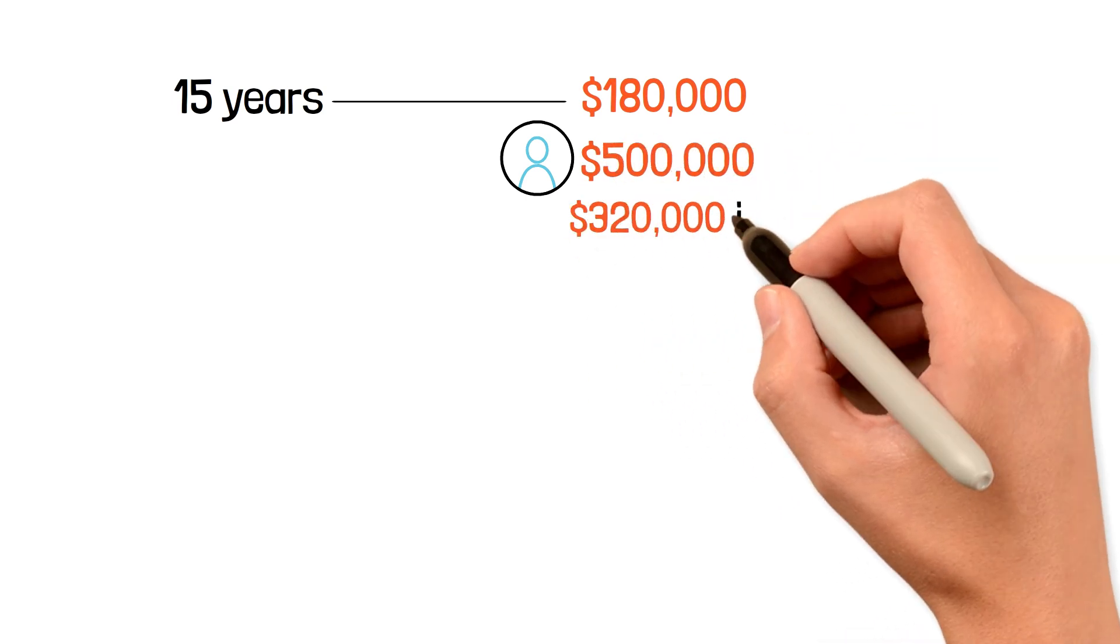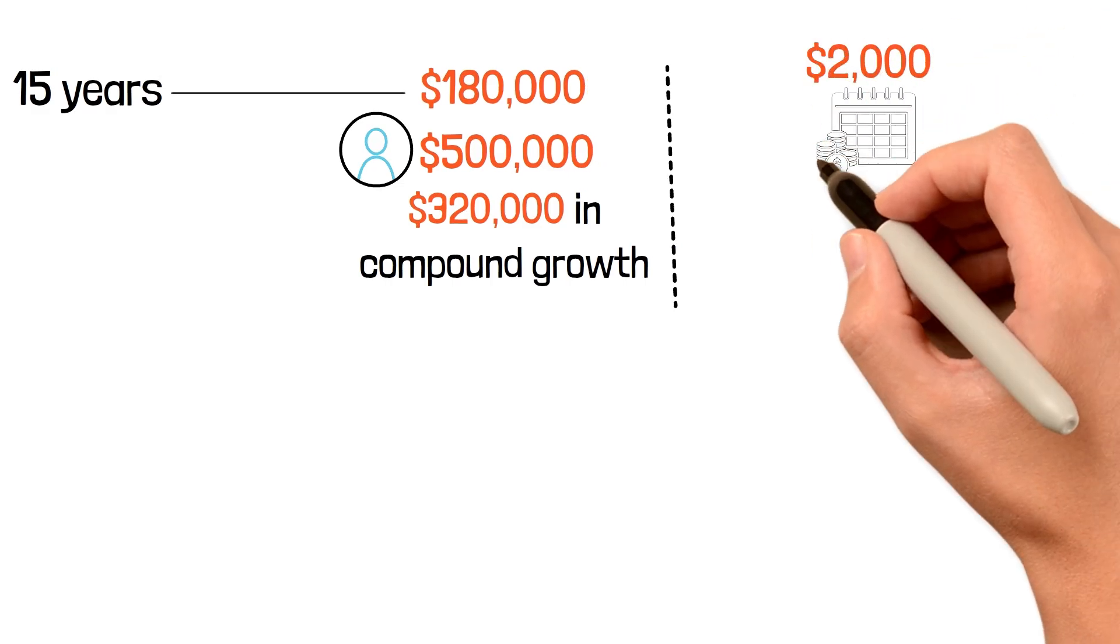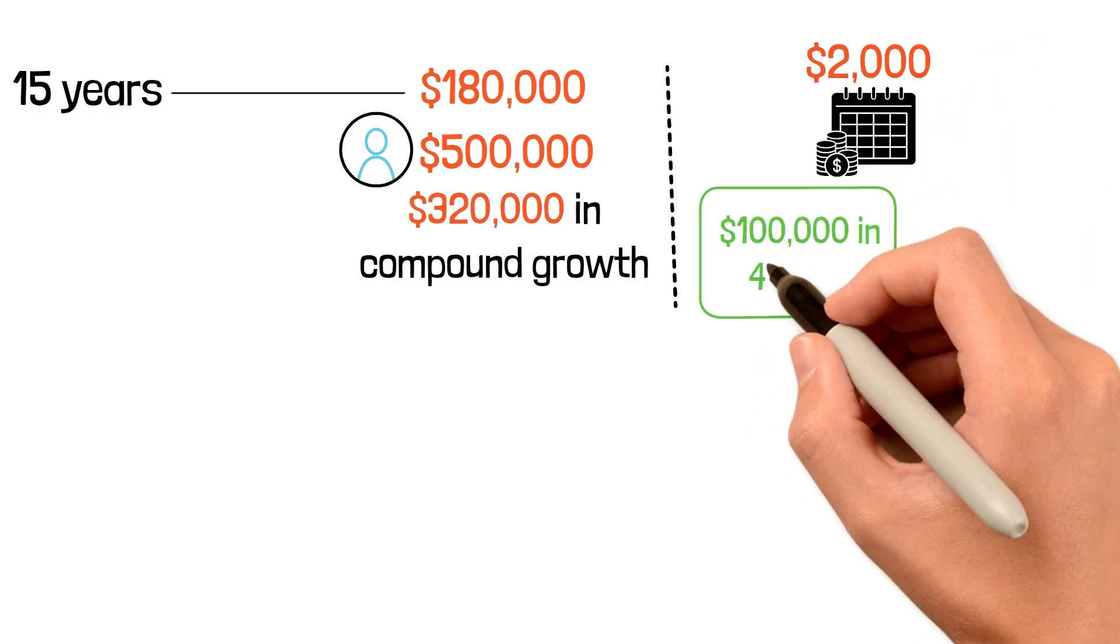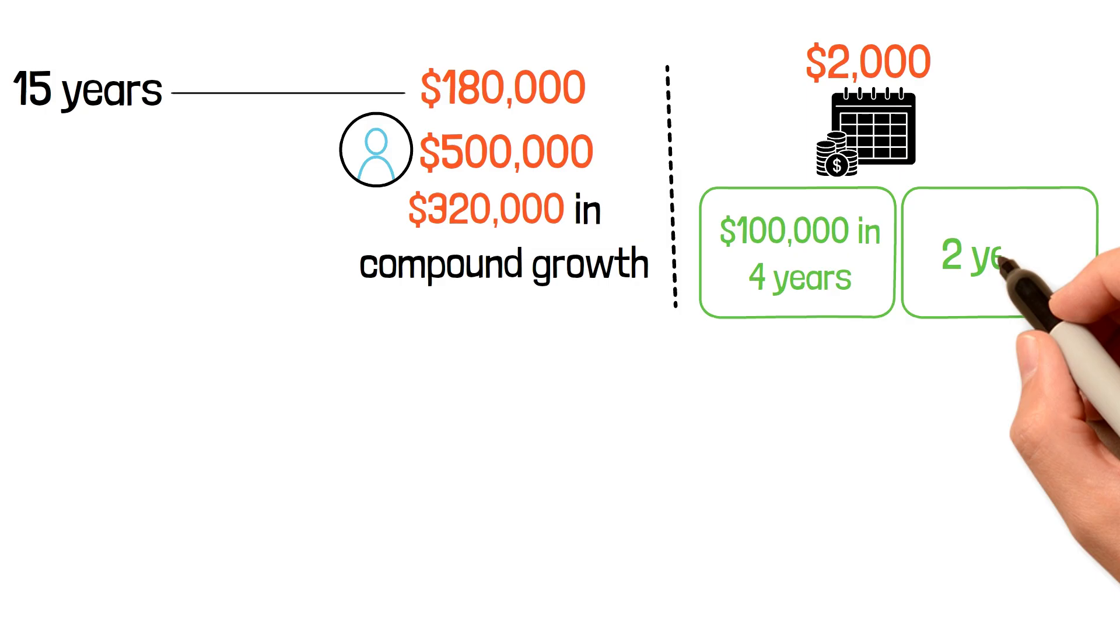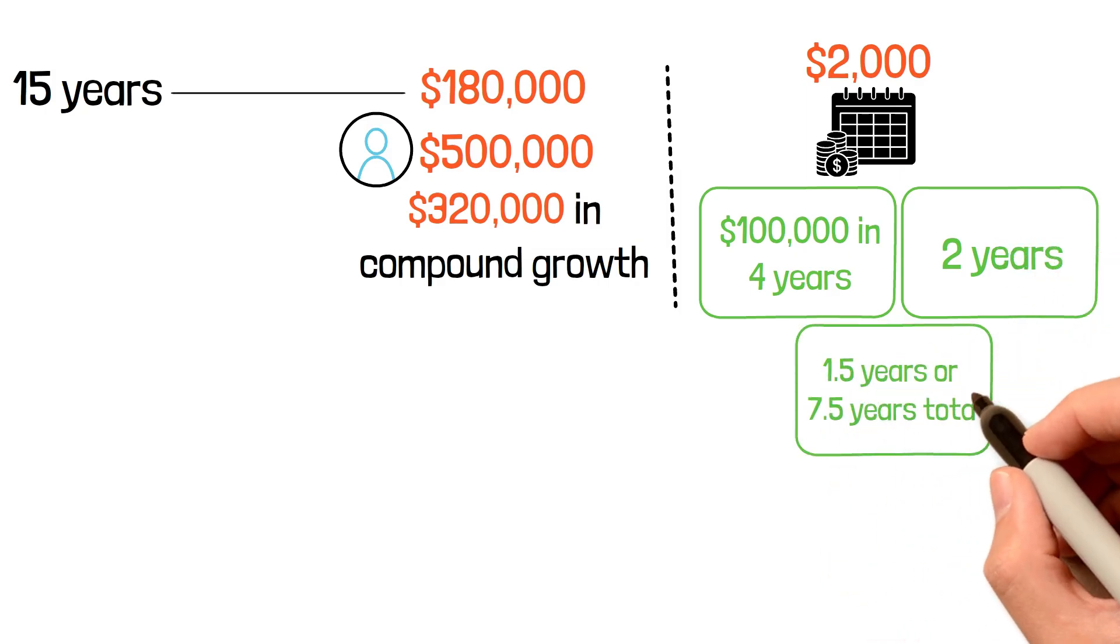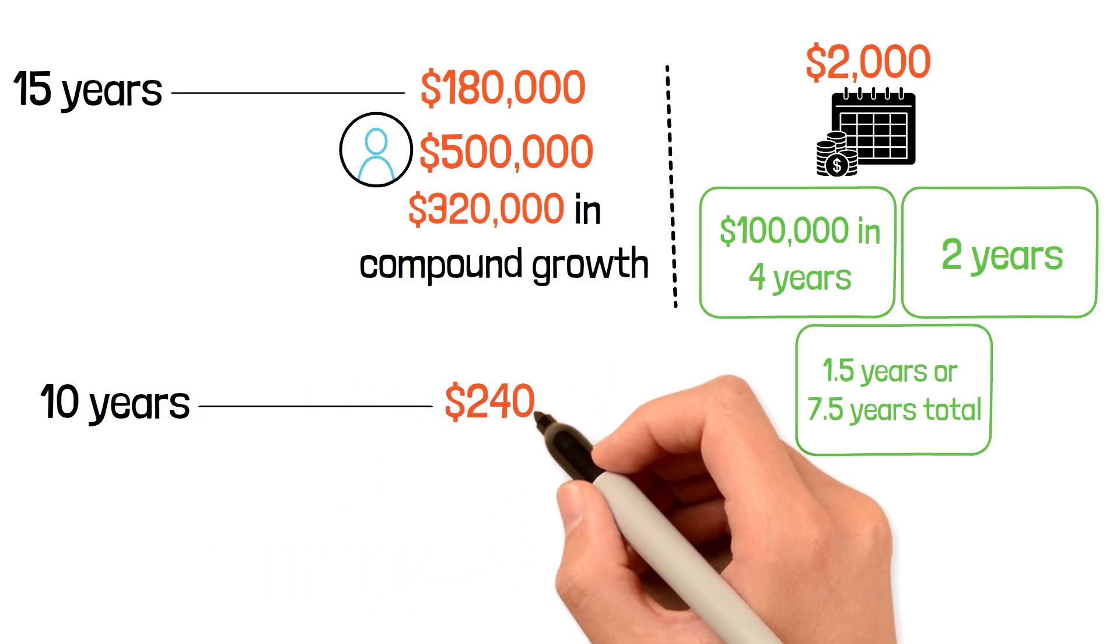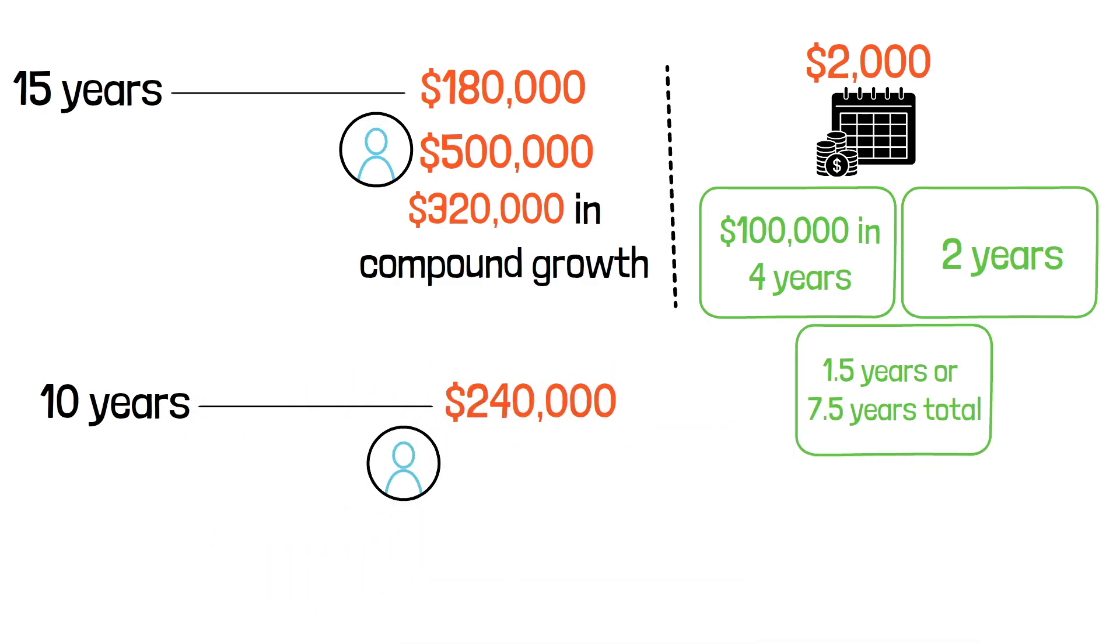With a $2,000 monthly investment, you accumulate your first $100,000 in 4 years, the second in 2 years, and the third in 1.5 years or 7.5 years total. After just 10 years, you've contributed $240,000, but your account is worth over $400,000. Notice the pattern.